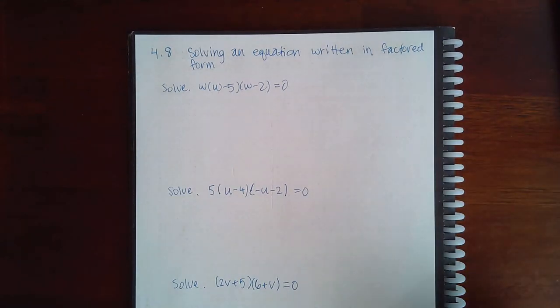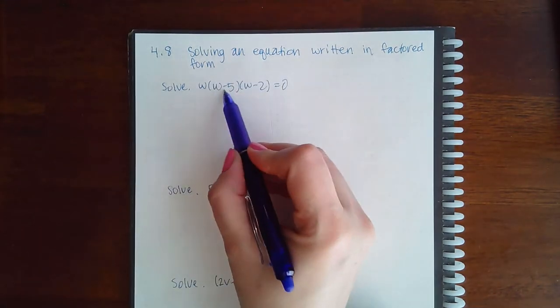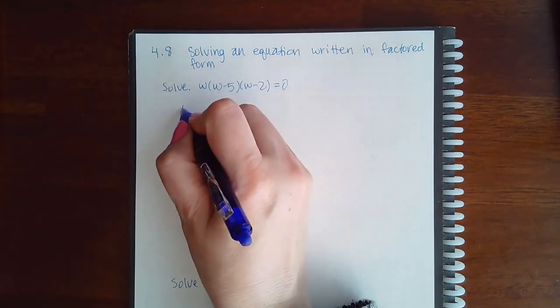Here we have 4.8 solving an equation written in factored form. Once an equation is written in factored form, all you simply have to do is say the only way that this product can equal zero is if maybe